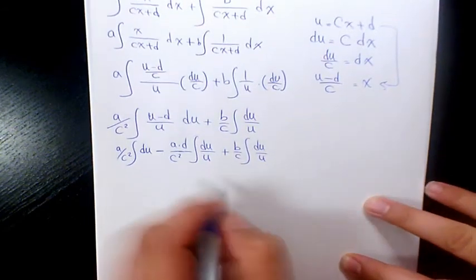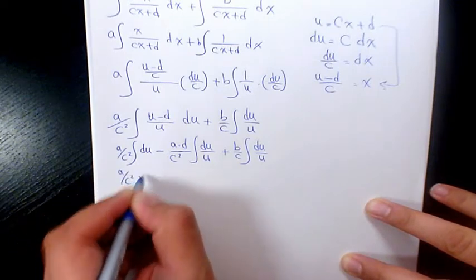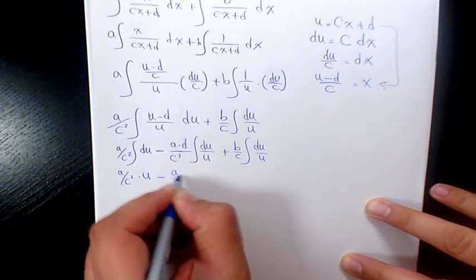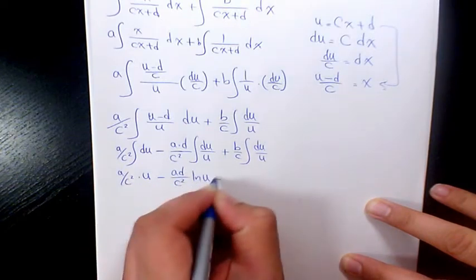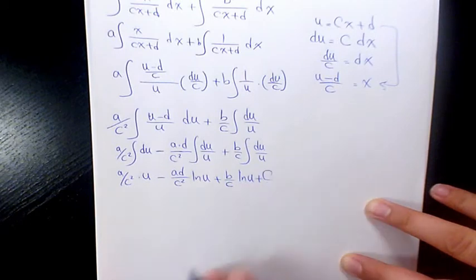So it's going to be a over c squared times u, minus ad over c squared ln u, plus b over c ln u, plus a constant number.